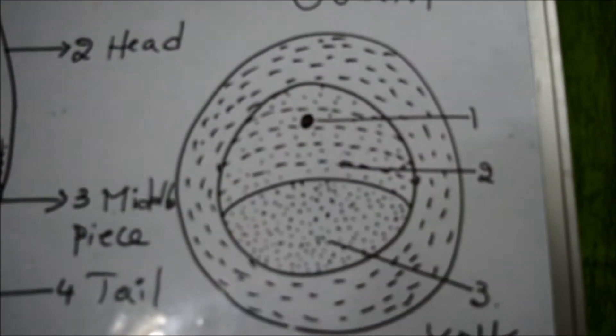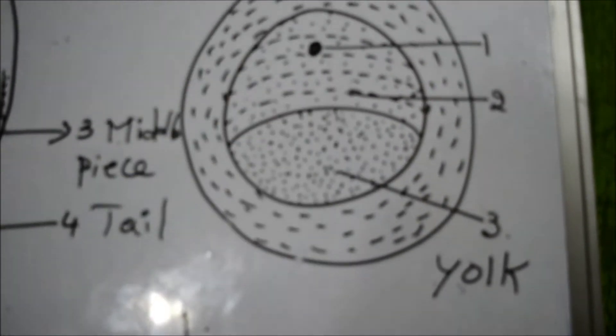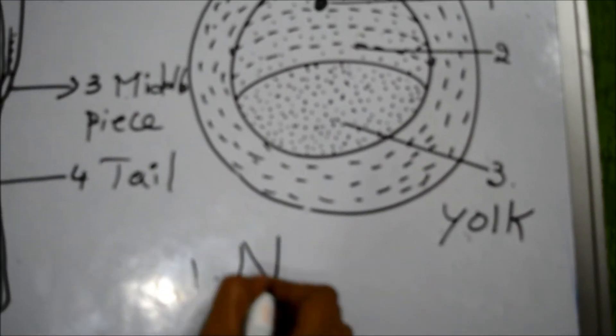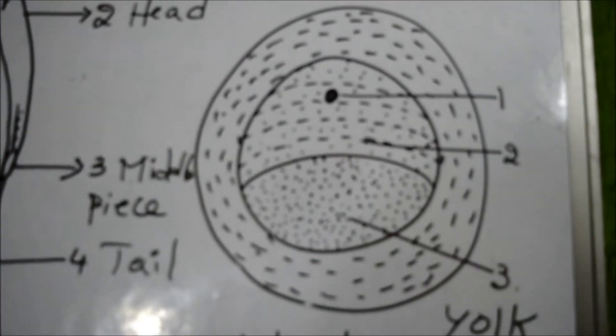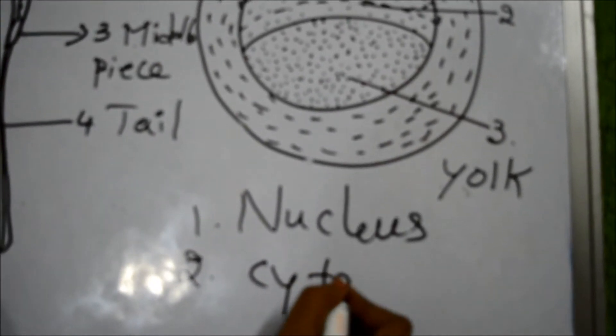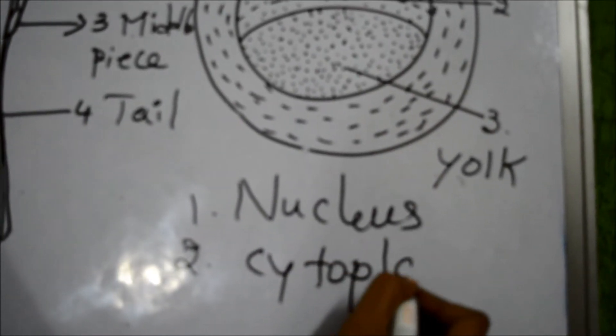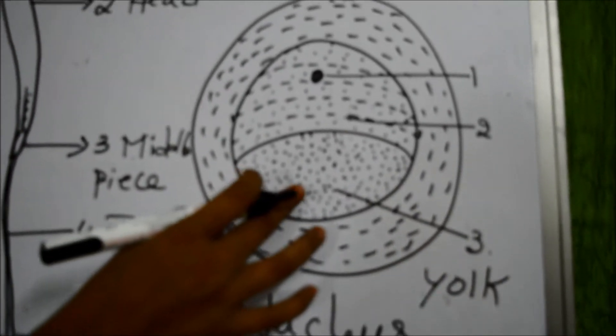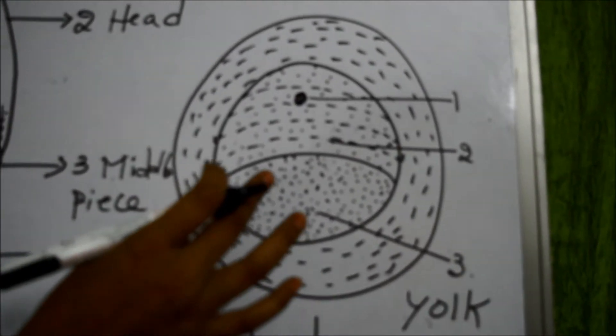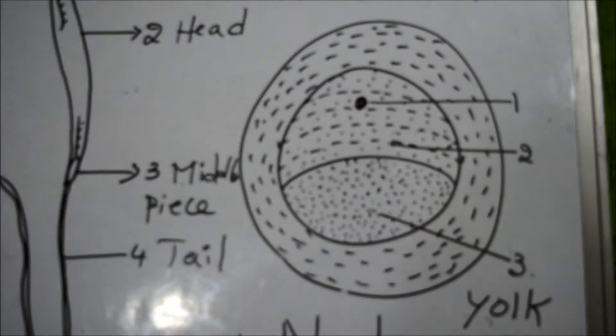It also has three parts. First one we can call as nucleus. Second one is cytoplasm. Third one is yolk. This yolk part, the ovum which reserves its food material.